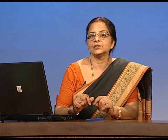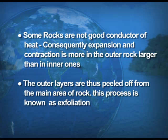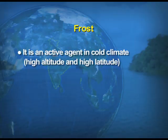Exfoliation — you can correlate it with the layers of an onion, like layers that get extracted. Exfoliation on rocks means when only the upper part of the rock is removed, that is known as exfoliation. The outer layers are peeled off from the main area of the rock, and this process is known as exfoliation.